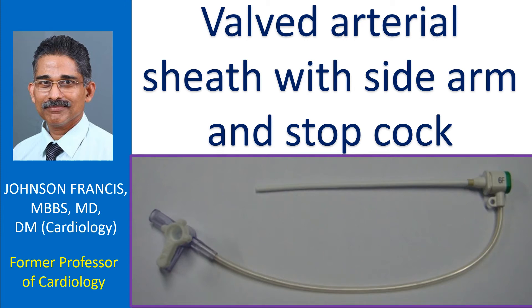A walled arterial sheath with sidearm and stopcock is used for introduction of catheters serially into major arteries like the femoral artery. The sheath is introduced over a guide wire which has been passed through the arterial puncture needle, the Seldinger needle. A dilator is inserted into the sheath prior to introduction and removed once the sheath is within the artery, as confirmed by withdrawal of bright red blood from the sidearm.